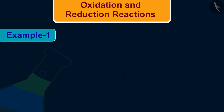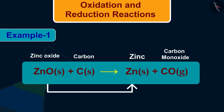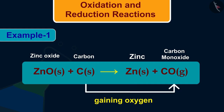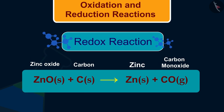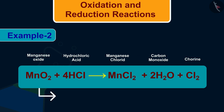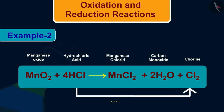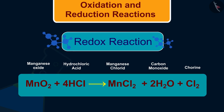In the first example, zinc oxide is losing oxygen — that is reduction — and carbon is oxidized to carbon monoxide. Hence it is a redox reaction. In the second example, oxygen is reduced from MnO₂ and HCl is oxidized to chlorine. Hence it is also a redox reaction.